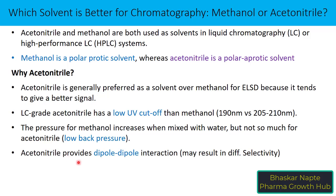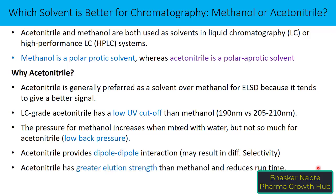Fourth, acetonitrile provides dipole-dipole interaction, and this may result in different selectivity compared to methanol. Fifth, acetonitrile has greater elution strength than methanol and can help reduce run time. These are the five reasons that explain why acetonitrile can be preferred over methanol.